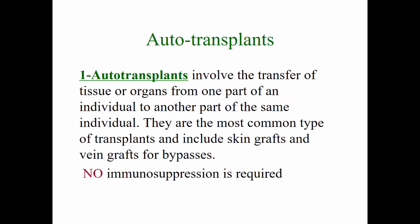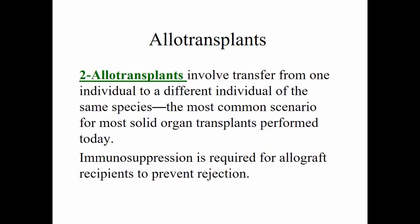Autotransplants involve the transfer of tissue or organs from one part of an individual to another part of the same individual — meaning you are the patient donating your own organ or tissue. An example would be having a saphenectomy and transferring that vein into the coronary arteries for coronary artery bypass, or a skin graft after a burn or major trauma. There is no need for immunosuppression since it's your own organ.